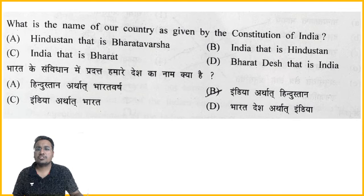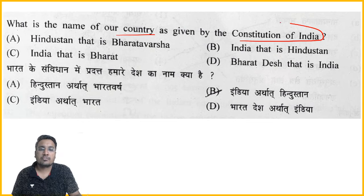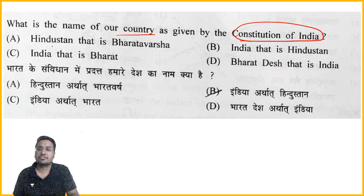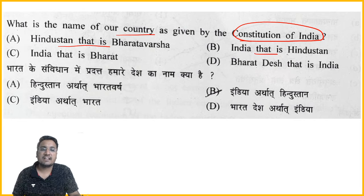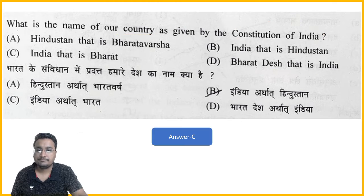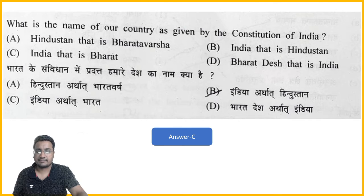Next question: What is the name of our country as given by the Constitution of India? The options are: Hindustan that is Bharatvarsh, India that is Hindustan, India that is Bharat, or Bharat Desh that is India. The right answer is Option C — India that is Bharat.